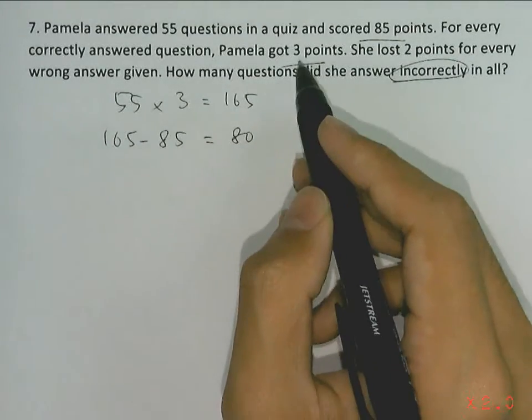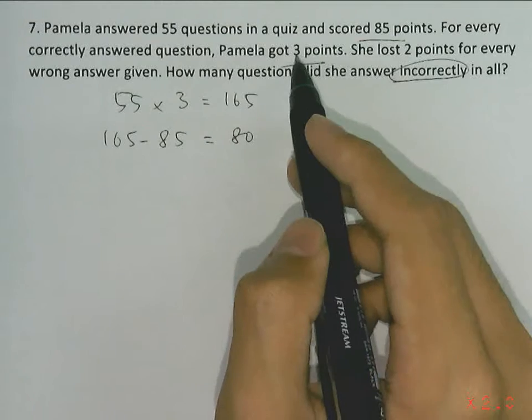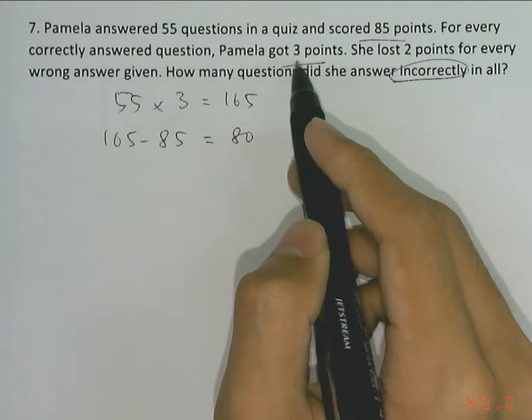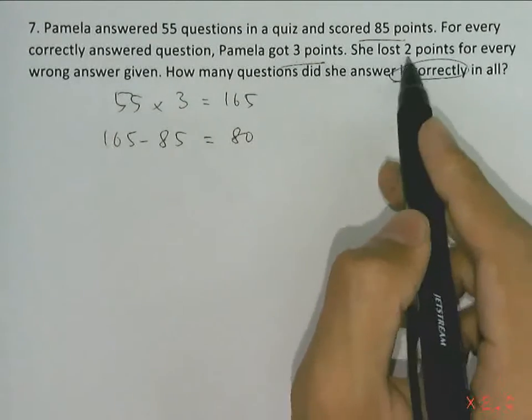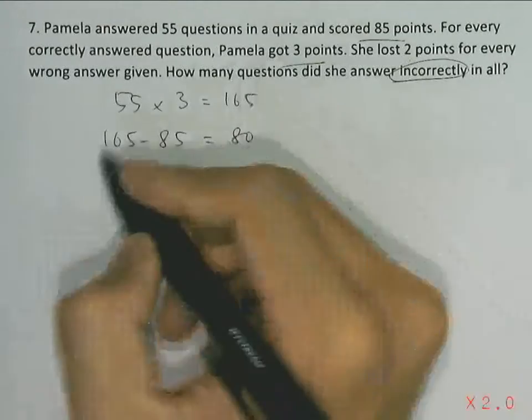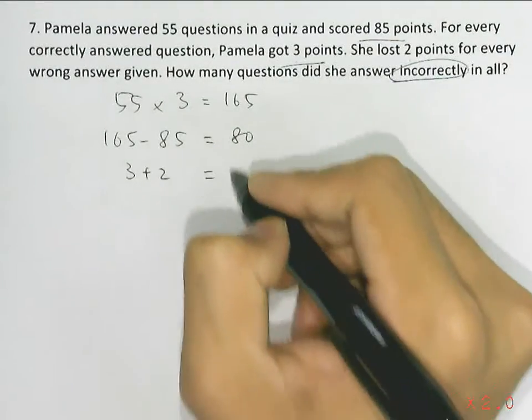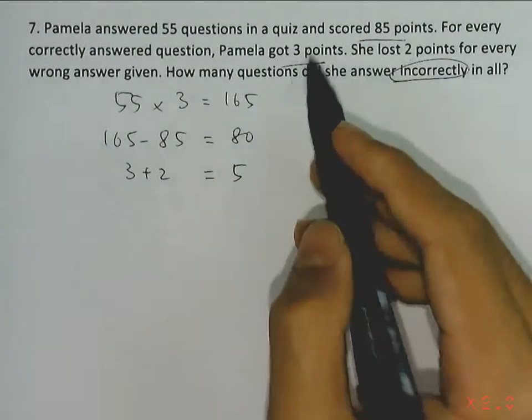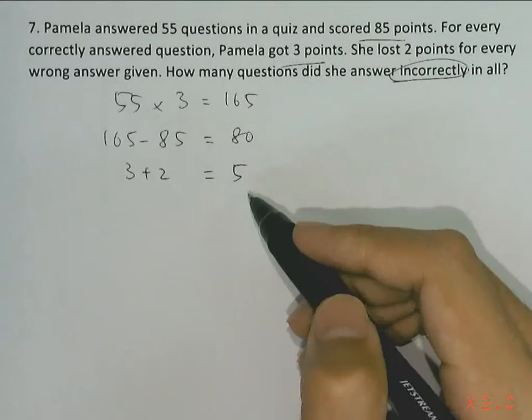Next, we have to find what's the individual difference between one correctly answered question where you earned 3 points and one wrongly answered question where you deducted 2 points. That's a difference of 5 points. Between earning 3 points and losing 2 points, the difference is 5 points.